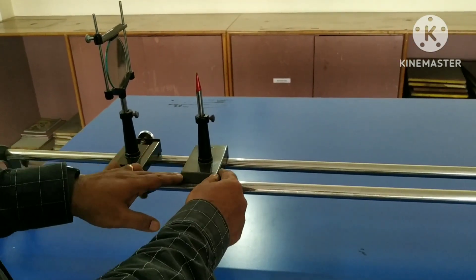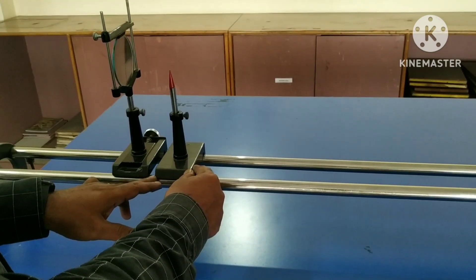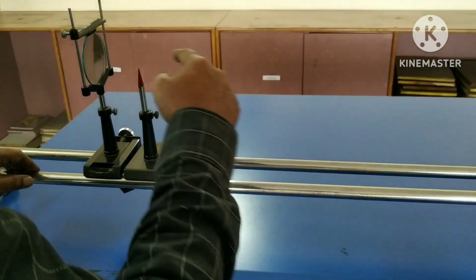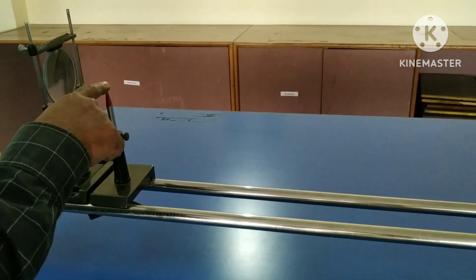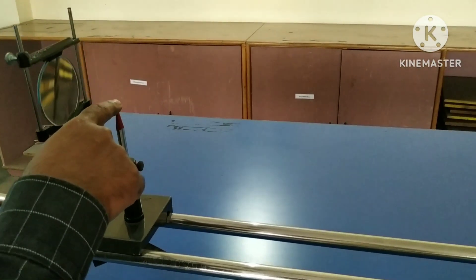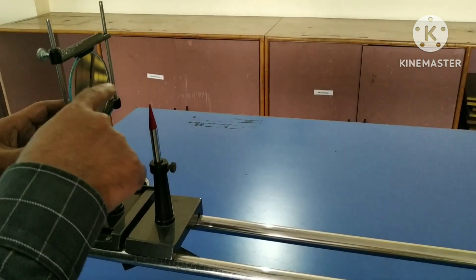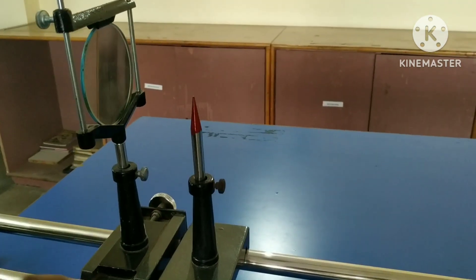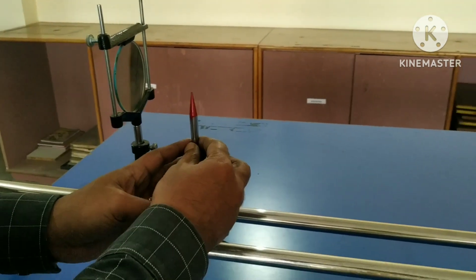Now we have to bring the pin closer to the mirror. Adjust the height of the pin so that the tip of the pin is at the level of the pole of the mirror. This height may be adjusted later if required.